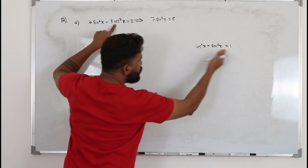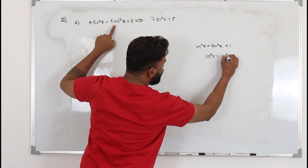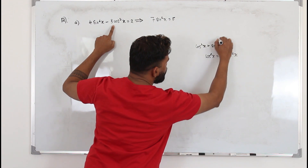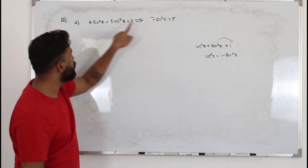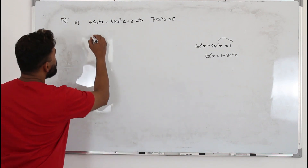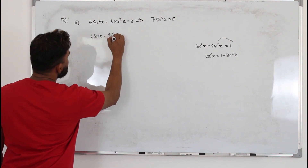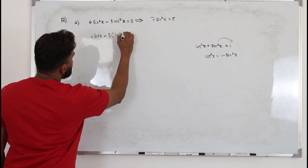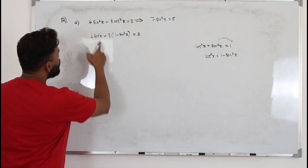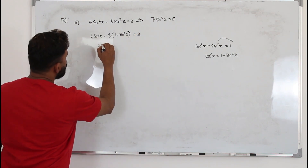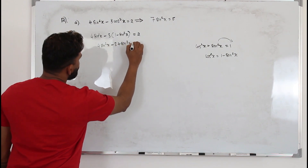Using the identity, cos²x = 1 − sin²x. Replace cos²x with (1 − sin²x) and simplify: 4sin²x − 3(1 − sin²x) = 2. Opening the bracket gives 4sin²x − 3 + 3sin²x = 2.